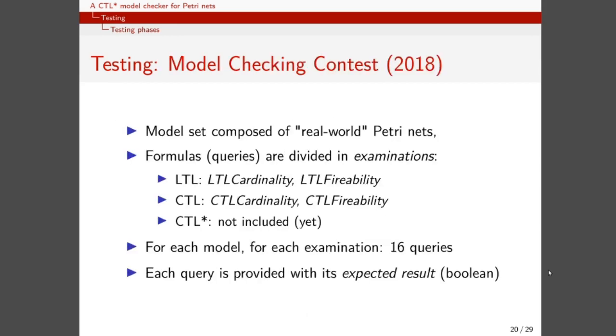The validation phase and the comparison phases uses the model set and the formula set of the model checking contest. The models are real-world Petri nets and the formulas are divided into different examinations for which the categories which interest us are LTL cardinality, LTL fireability, CTL cardinality, and CTL fireability. Note that the model checking contest does not include any CTL-STAR proposition yet, but for each examination we have 16 formulas or queries, and each query is provided with a boolean expected result, true or false, which should match the result of our tool.